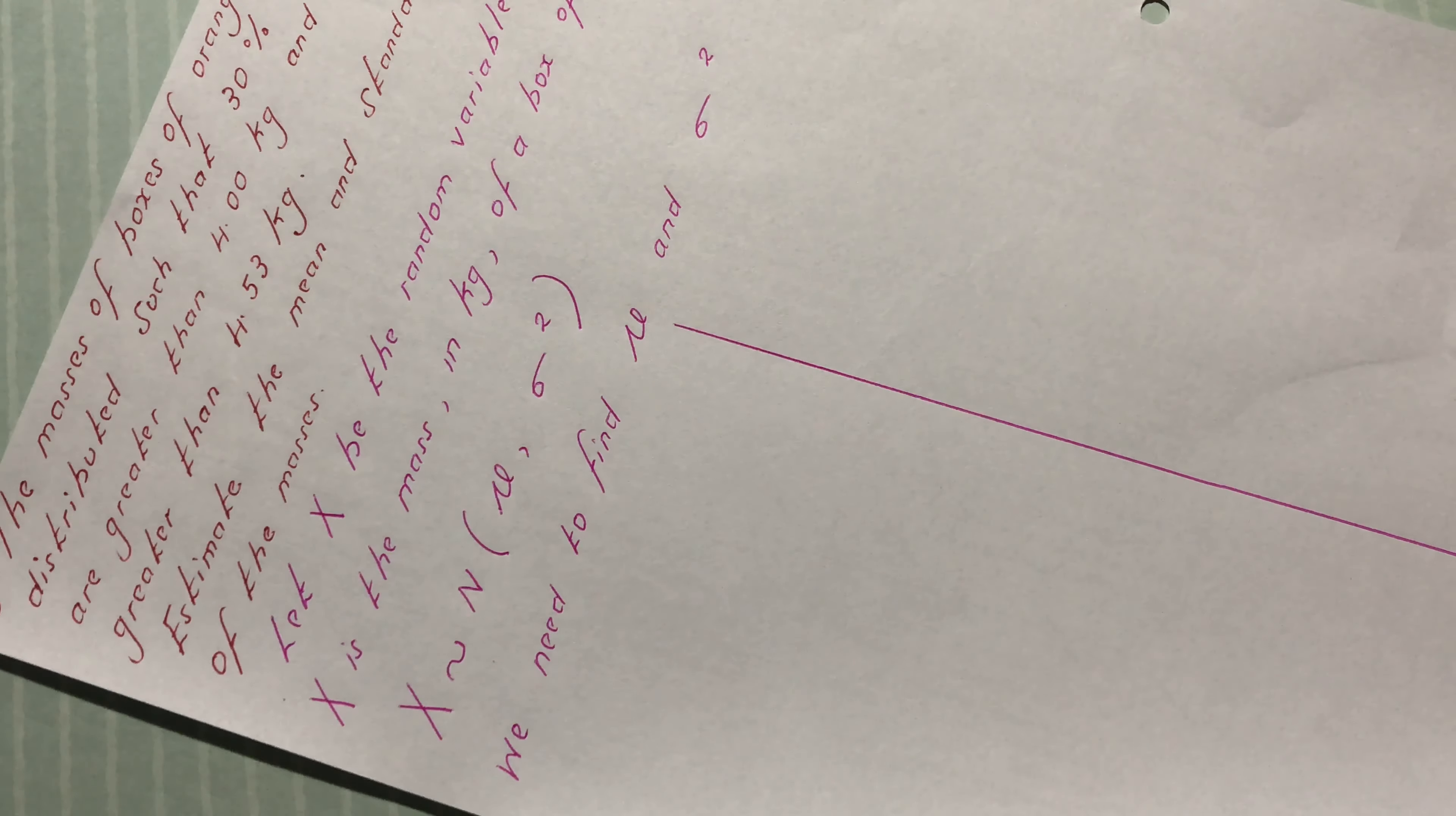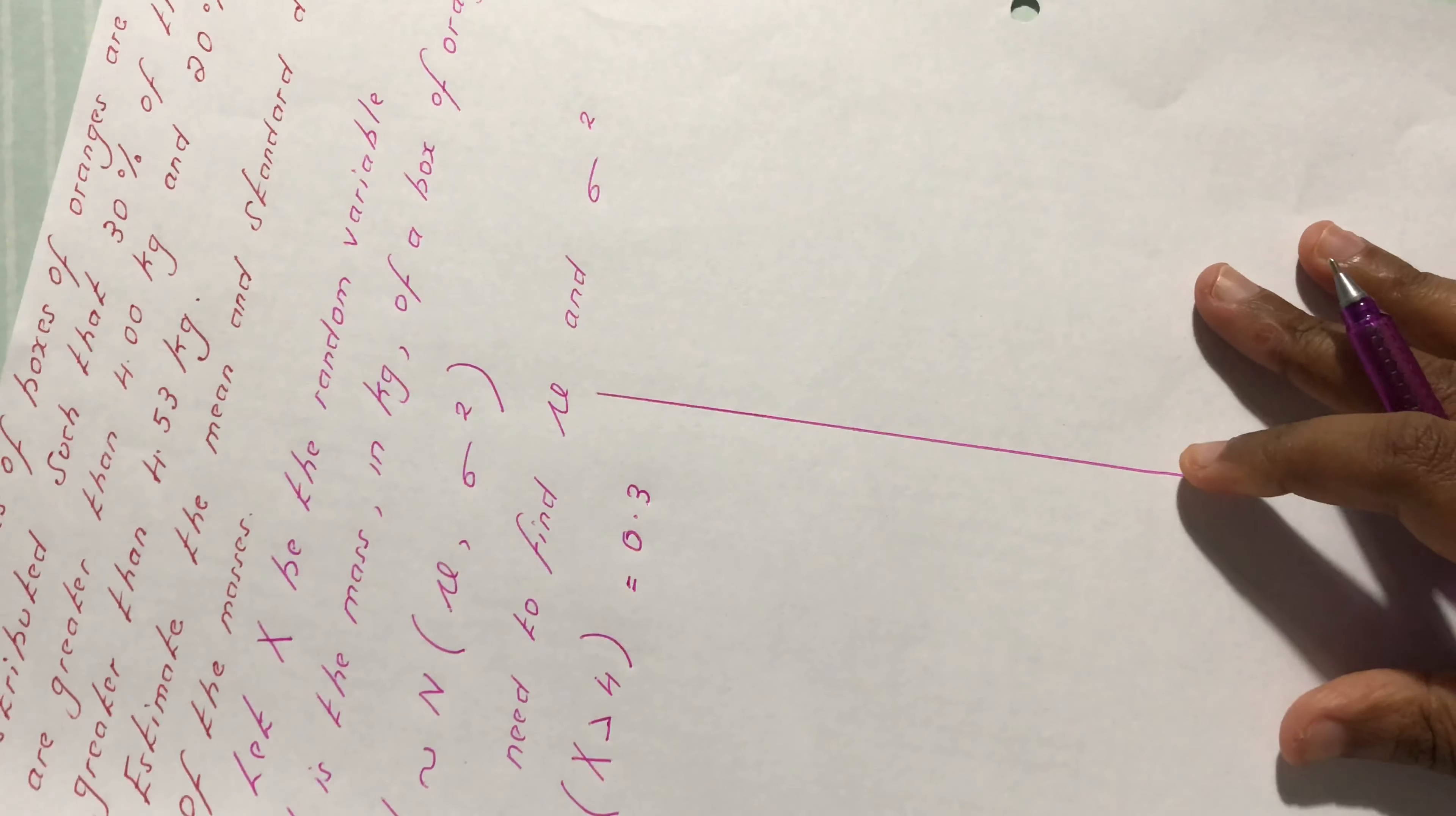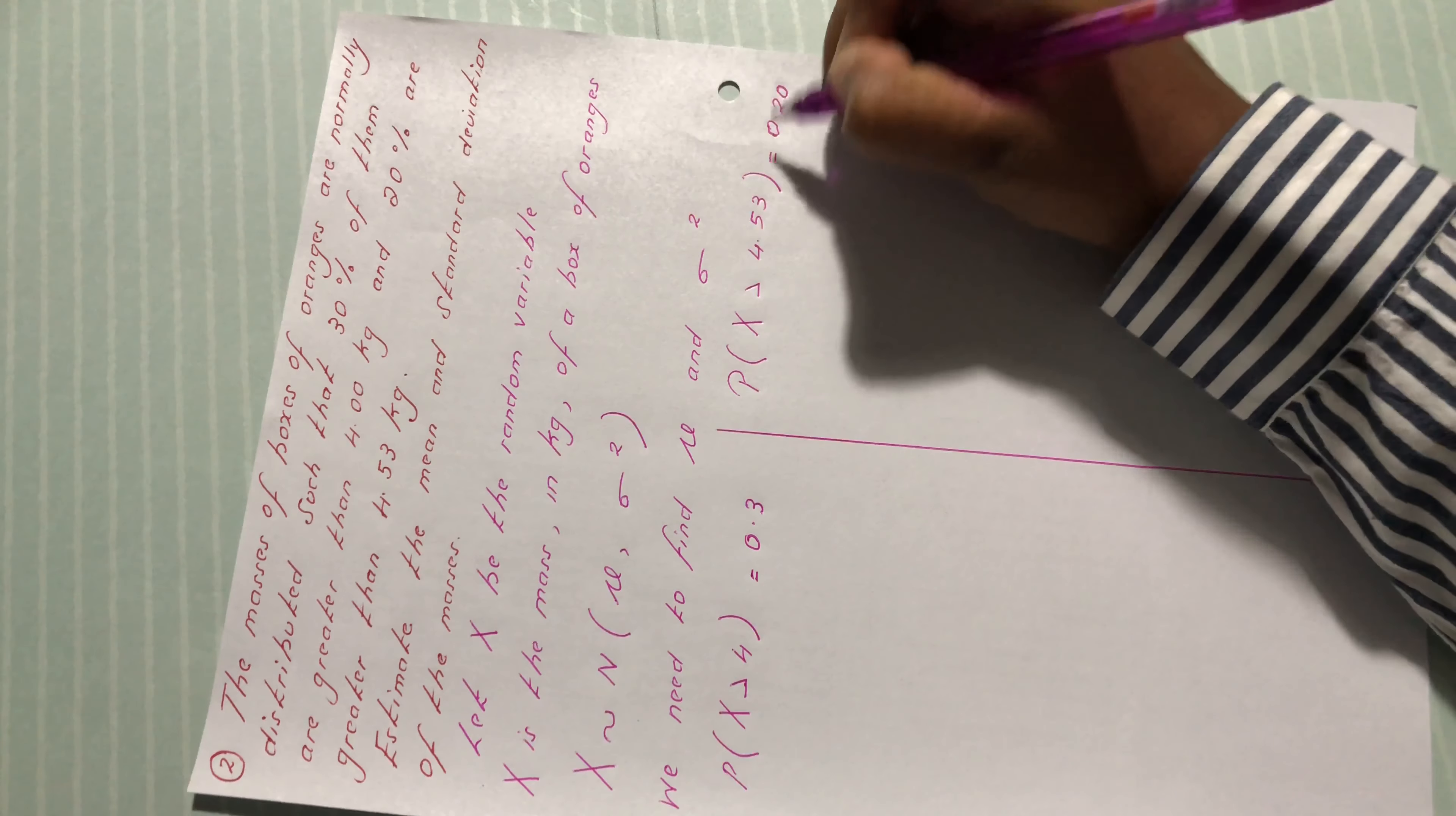We have been given that 30% of them are greater than 4, so probability of x greater than 4 is 0.3. And 20% are greater than 4.53, so probability of x greater than 4.53 equals 0.2.